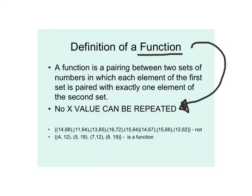If you look at the first set of ordered pairs below, the answer is no — it's not a function. The x value 14 occurs twice. In order for it to be a function, every x value must be different. The second one: yes, because every x value — 4, 5, 7, and 8 — is different. With a function, no x value can be repeated. Y values can be repeated; they don't have this rule. The rule is just for x values.